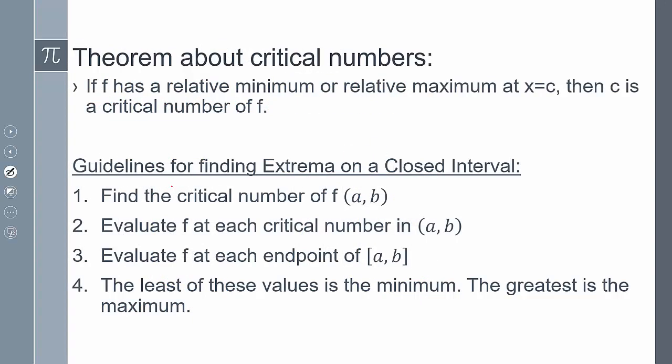The theorem about critical numbers: if f has a relative minimum or relative maximum at x = c, then c is a critical number of f. Thinking backwards — if I know my function has relative max and mins at those values, then I can conclude that c is going to be a critical number.